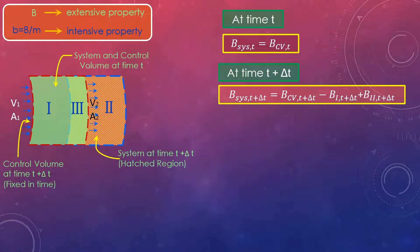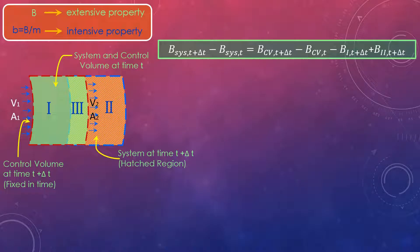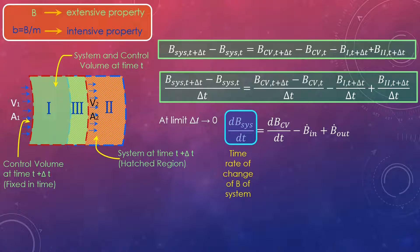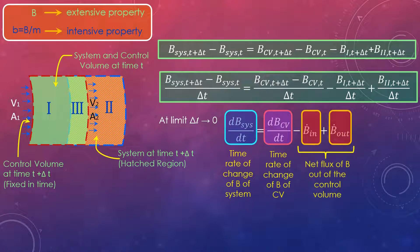Subtracting the first equation from the second one and dividing by delta t gives the following expression. Now taking the limit delta t tends to 0 we get dB_system/dt is equal to dB_control volume/dt minus B_in plus B_out. This equation states that the time rate of change of property B of the system is equal to time rate of change of B of the control volume plus the net flux of B out of the control volume by mass crossing the control surface. This is the desired relation since it relates the change of property of the system to the change of that property for a control volume.